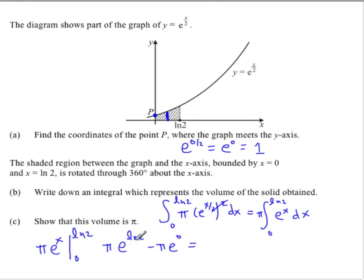So I have π e to the ln 2 minus π e to the 0. e to the ln 2—those e and ln are inverses of each other, so those go away. We get 2π, or π times 2, minus e to the 0, which we just did, is 1, so that's π.